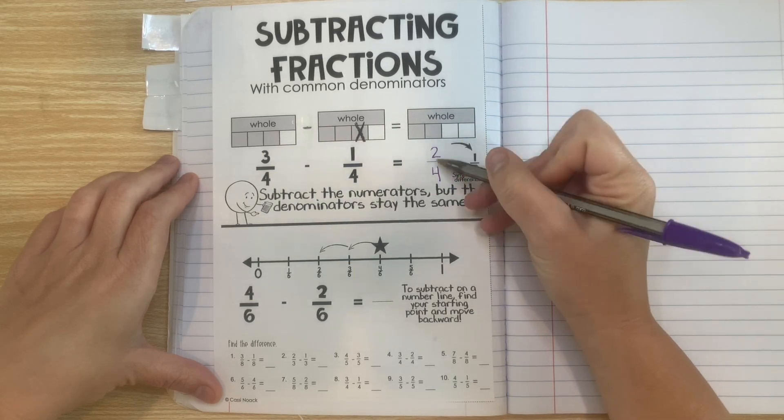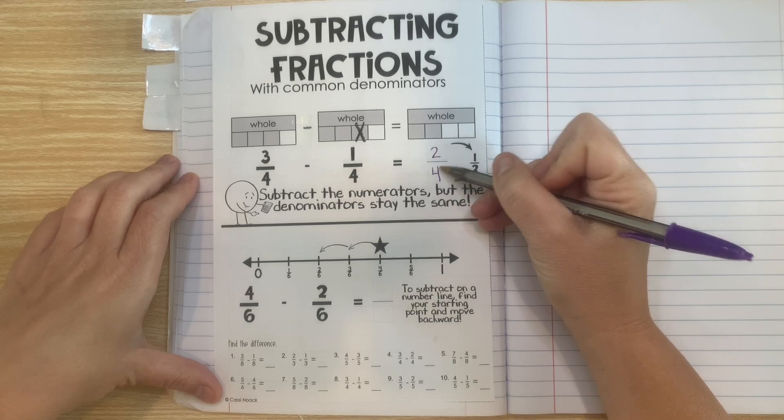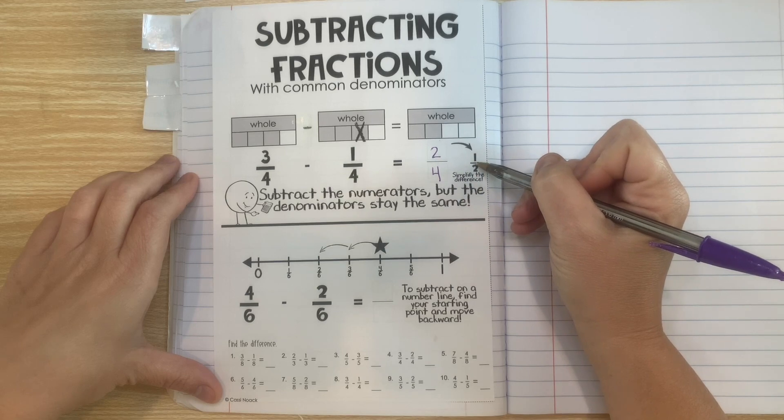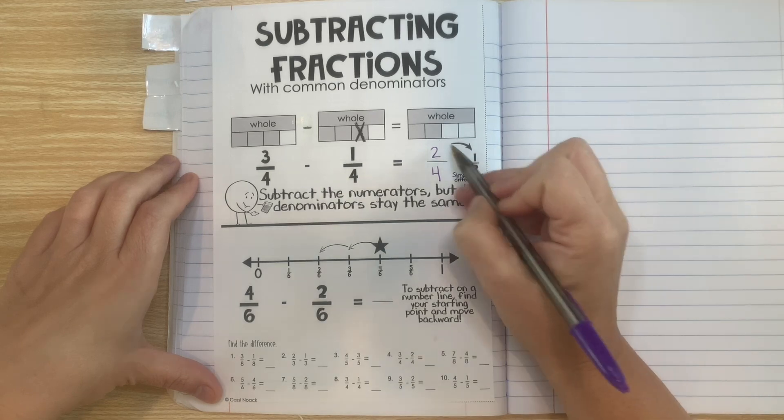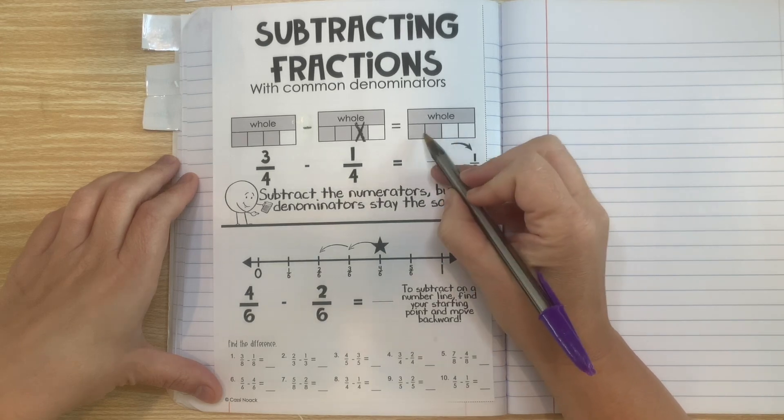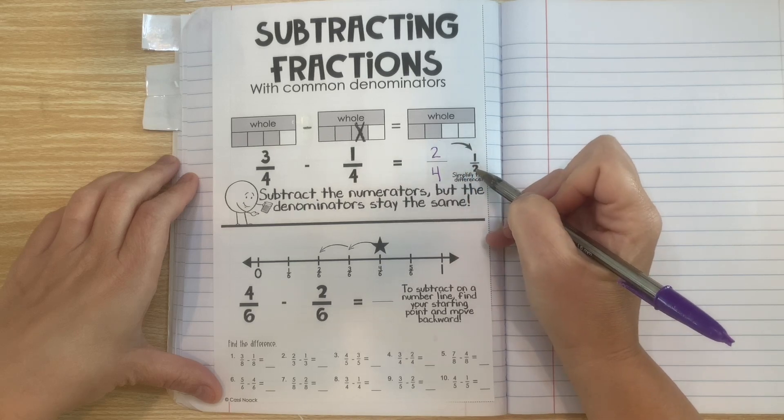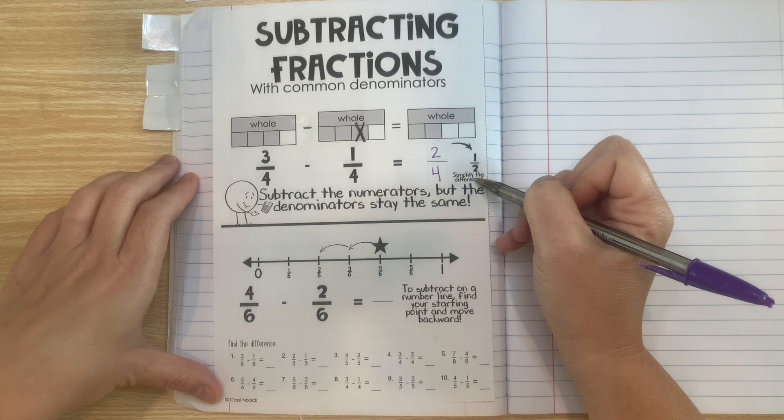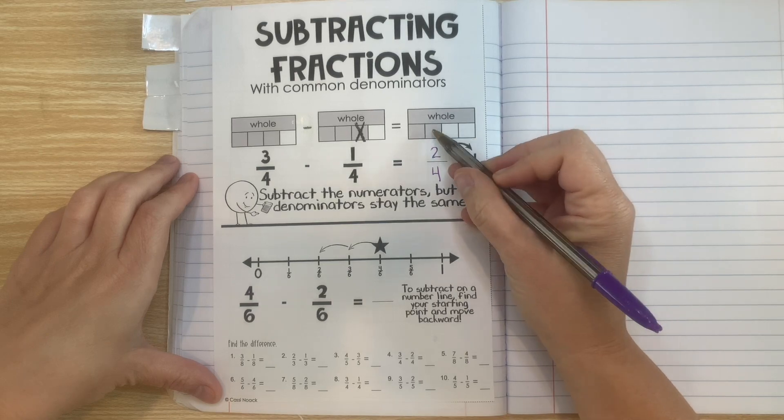Now look right here. We have 2 fourths and it says simplify the difference. Is 2 fourths the same as 1 half? We can just look at it and tell that 2 fourths is the same as a half. So simplify just means to write it with smaller numbers in a way that still represents the same amount.